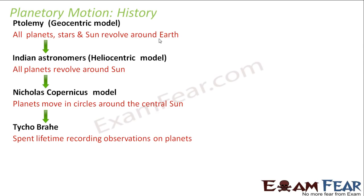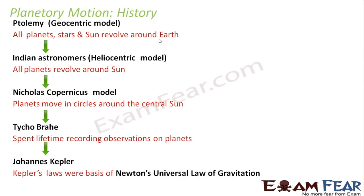Then came Johannes Kepler, who gave Kepler's laws of planetary motion. These three laws — Kepler's first, second, and third law — together completely explained planetary motion to a large extent. Kepler made use of the data collected by Tycho Brahe. These Kepler's laws were the basis of Newton's universal law of gravitation.